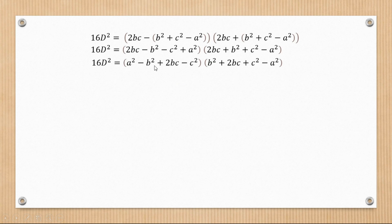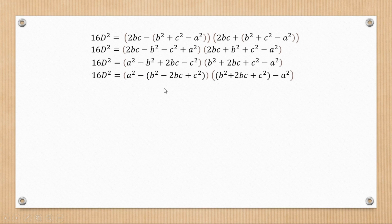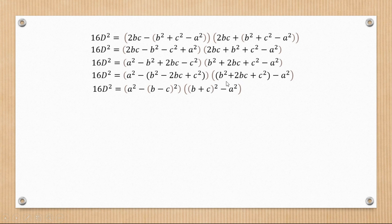Rearranging and combining values, we notice we have a 2bc term, a b², and a c², which allows us to form perfect-square brackets. We get b² + 2bc + c² in one group, and a² − (b² − 2bc + c²) in another, from which we can factor out a minus. This gives us (b + c)² and (b − c)² as our squared bracket forms.